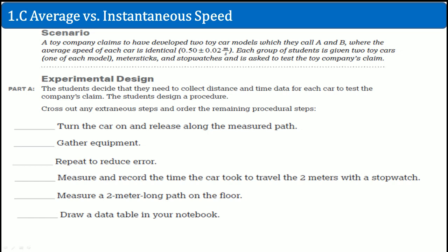The student decides that they need to collect distance and time data for each of the car test companies. The students designed these procedures. You're going to cross out any steps that are useless, that's the extraneous, and reorder them. So here is your list. You could try it now. So first of all, you can say that you could take out gathering equipment, because they already say in the question that they gave you the two toy cars, meter sticks, and the stopwatch. Then you could also take out, draw a table in the notebook, useless. The procedure is referred to as more as the collecting the data part.